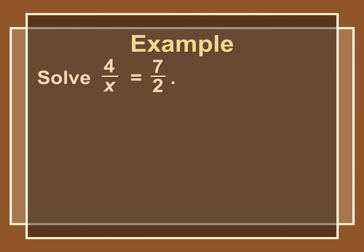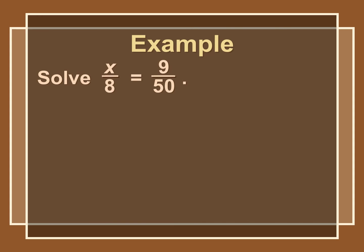Let's try two more. Cross-multiplying the first gives 8 equals 7x; dividing both sides by 7, we get approximately 1.14. For the next one, 50x equals 8 times 9, which is 72; dividing both sides by 50, we get approximately 1.44.